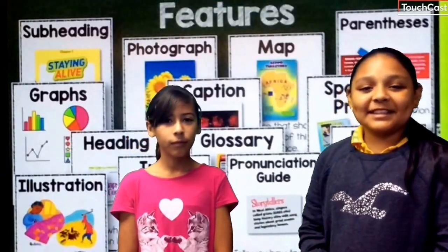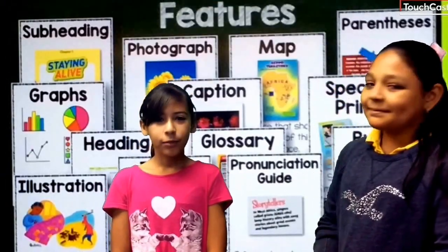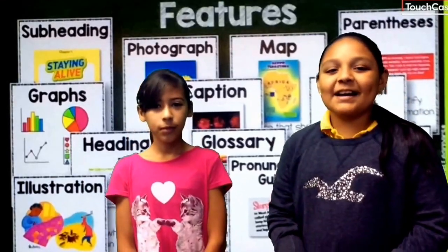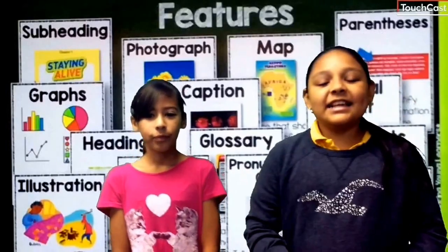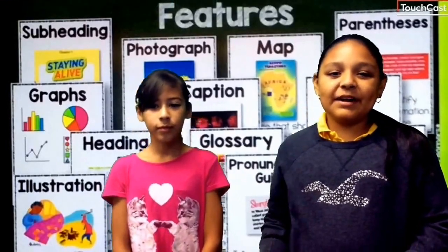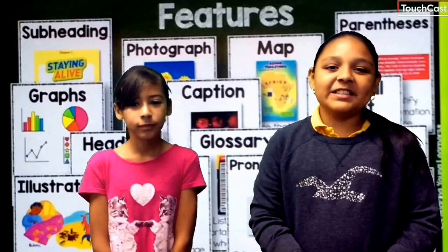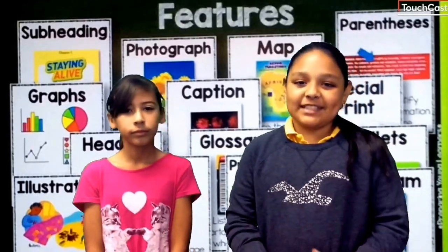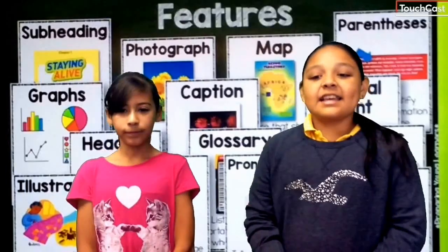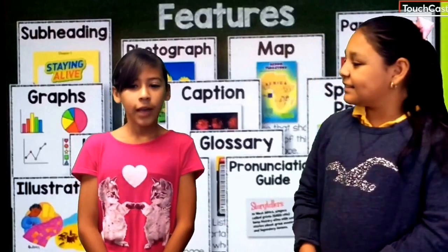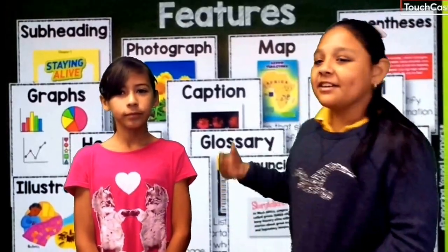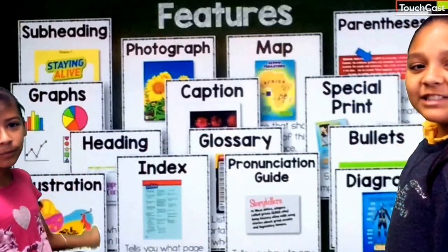Hi, my name is Marlise Arreola Gonzalez. My name is Perla Arreola, and today we will be talking to you about text features. The text features we will be talking to you about are from a piece called A Life in the Woods. We will be only telling you six: heading, subheading, title, caption, bullets, and map. Here is a picture of some more text features.